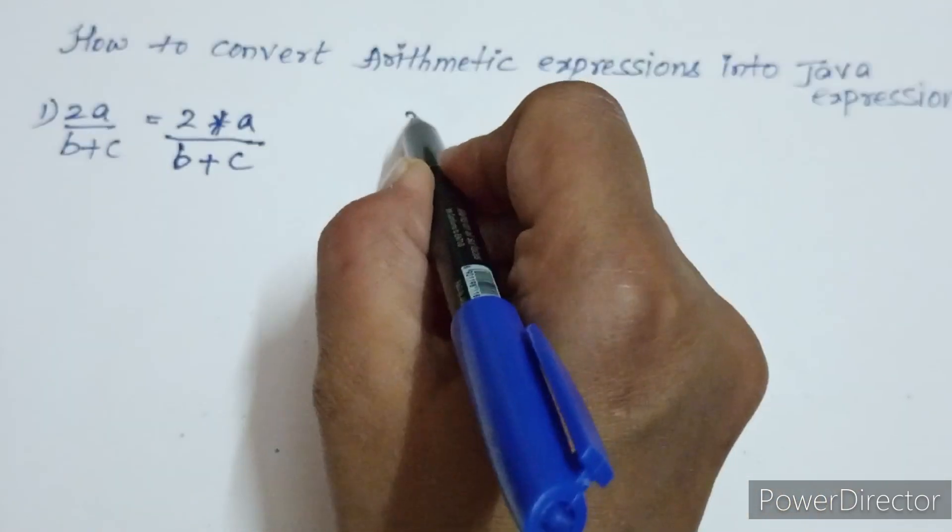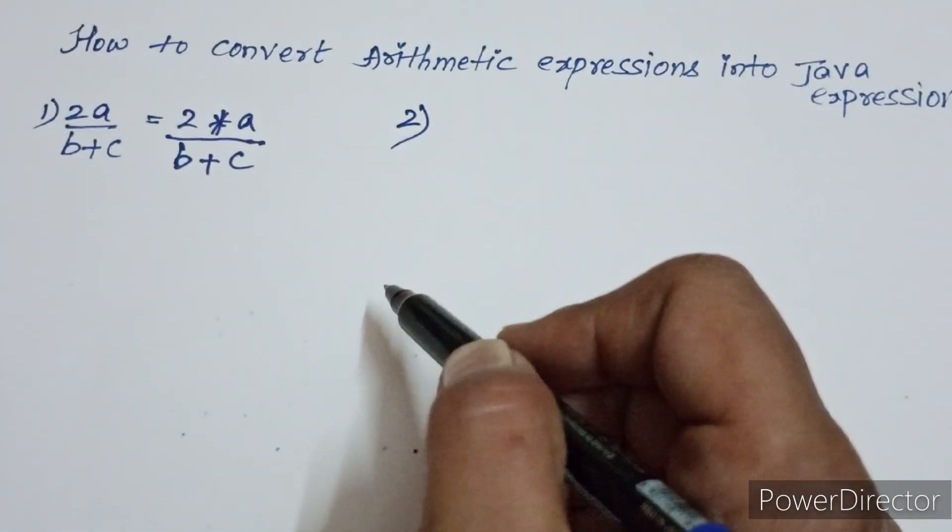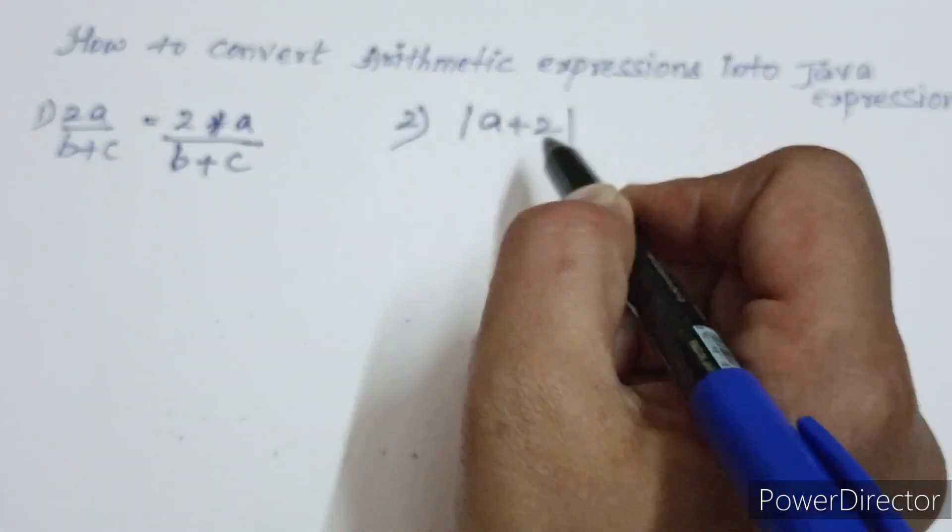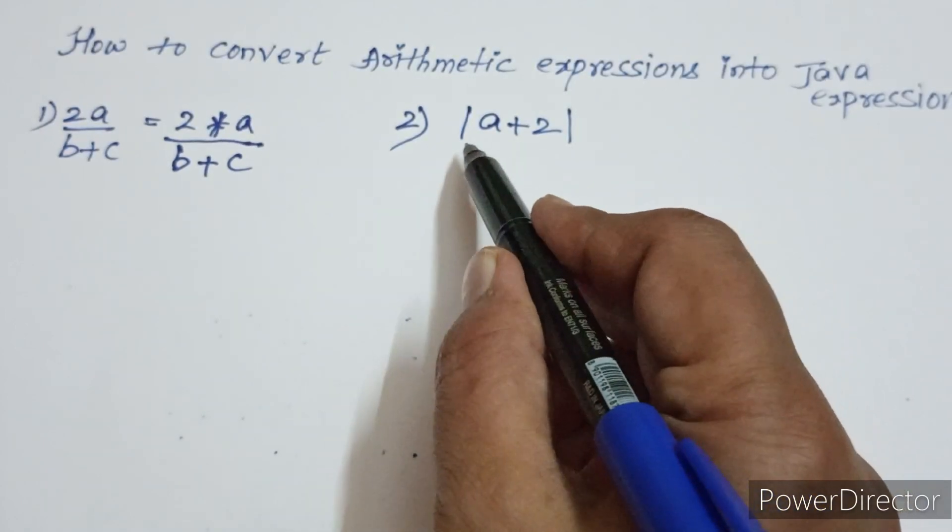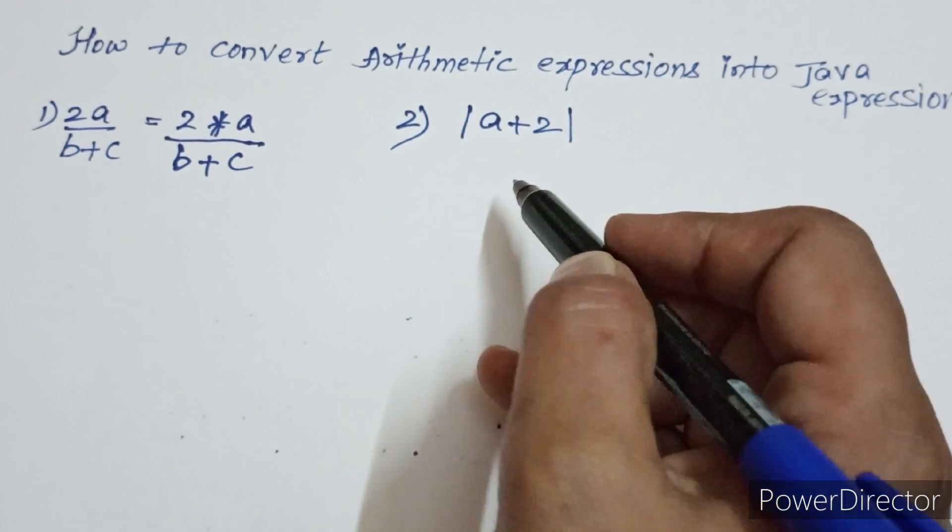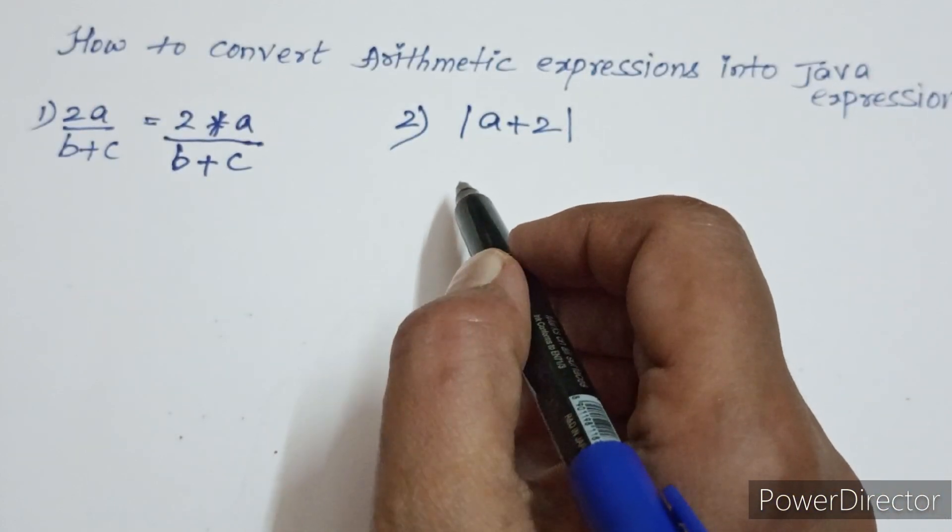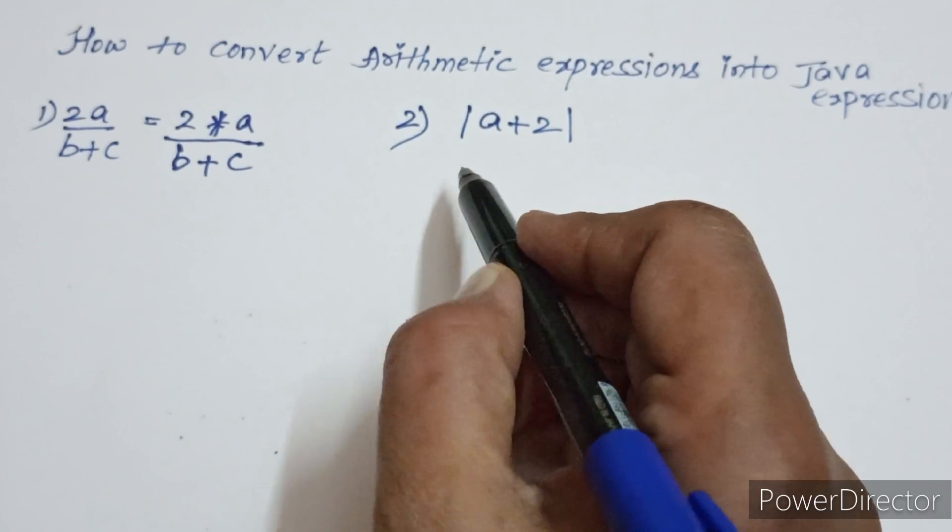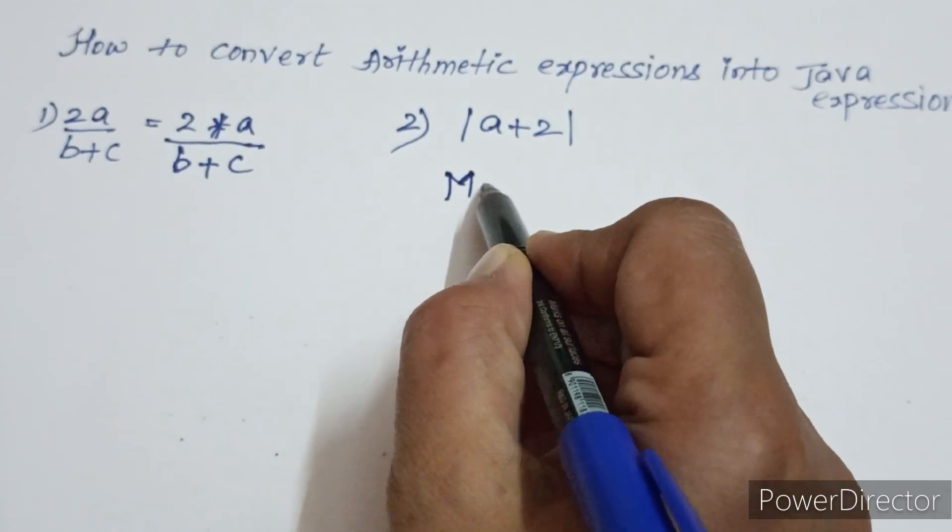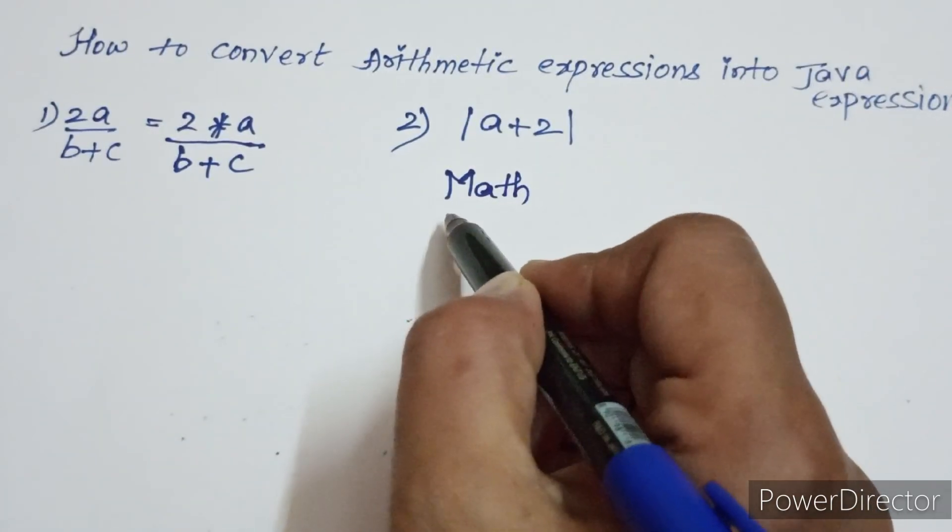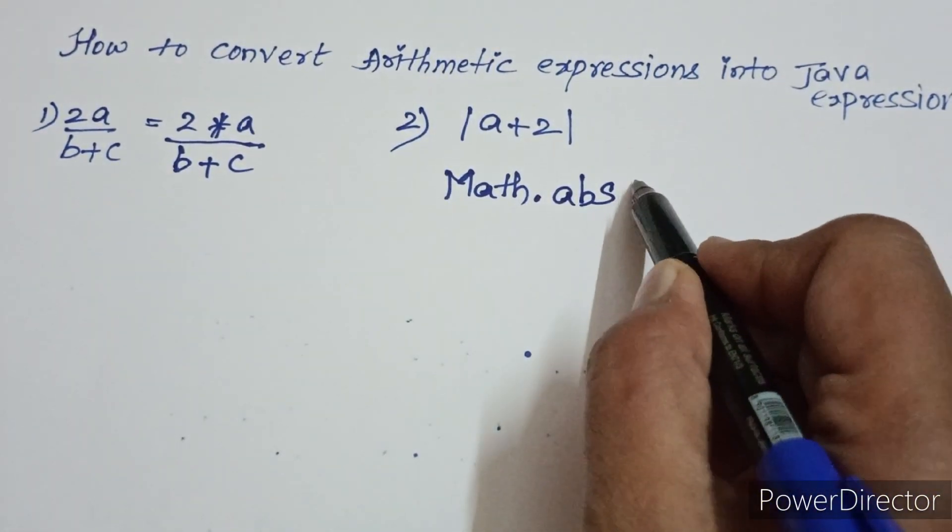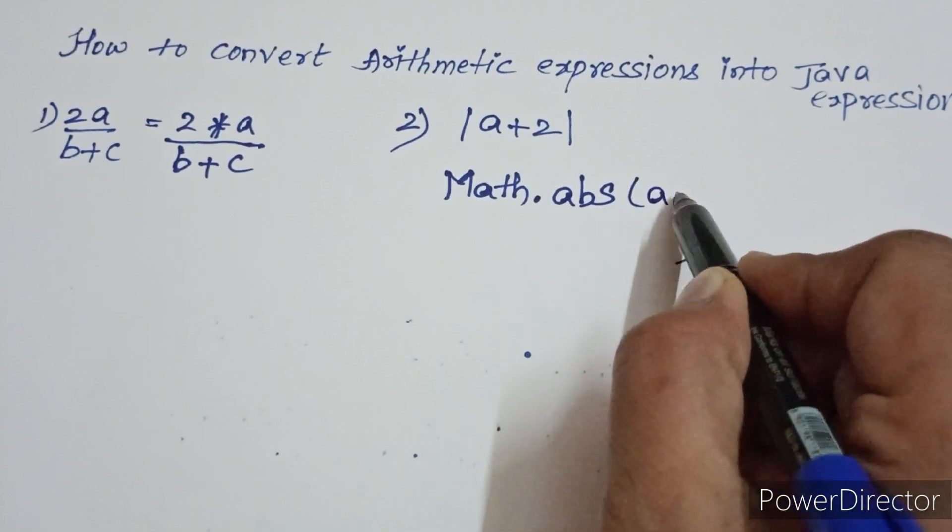Let's do the second example. The expression is mod a plus 2. This expression is read as absolute value of a plus 2 in mathematics. In Java, how will you write this modulus arithmetic expression? You have one predefined method called absolute. For that, you write Math class, M must be uppercase, dot abs, absolute of a plus 2.